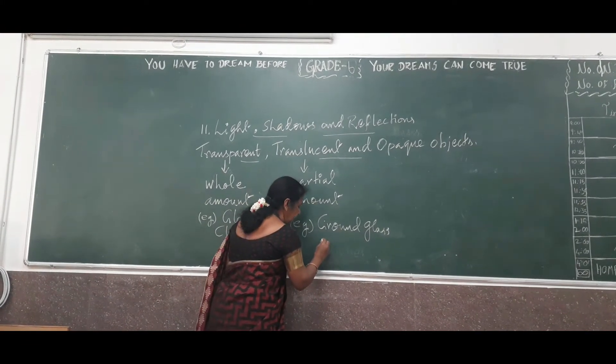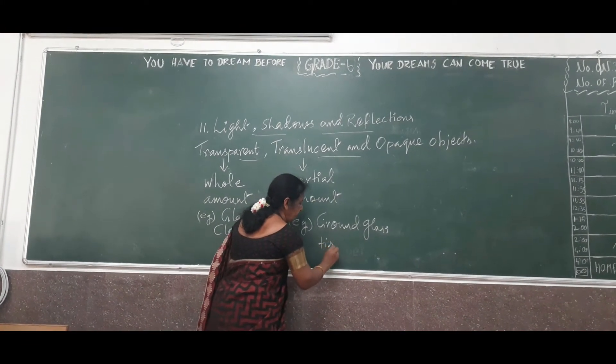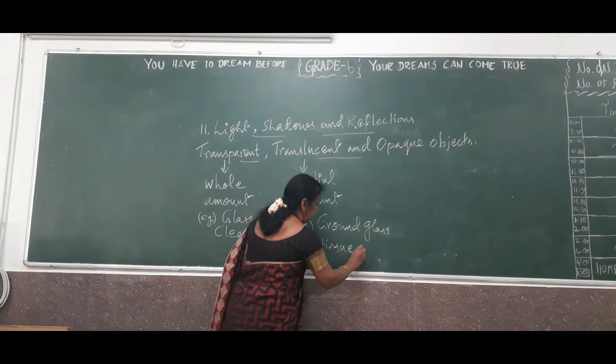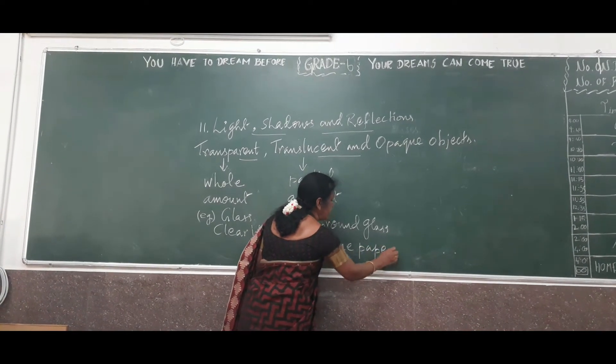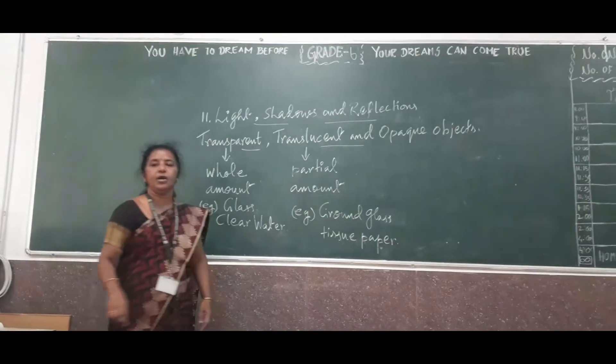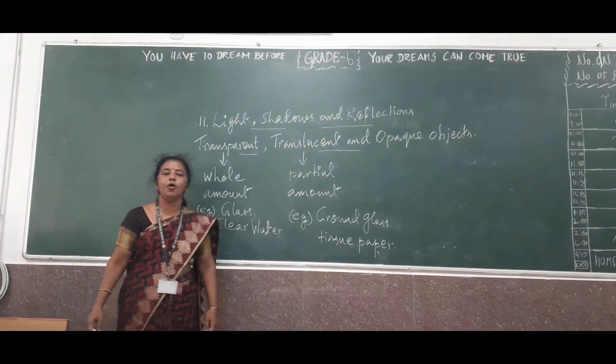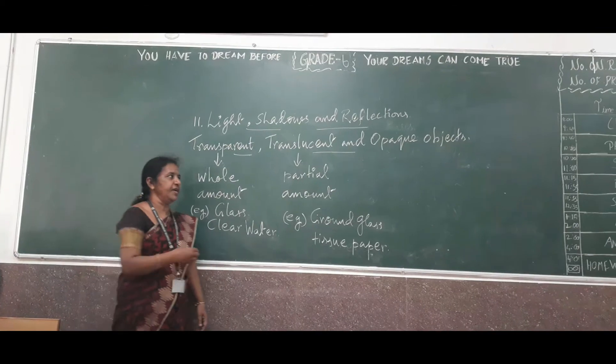that is the tissue paper, or you can see the ordinary paper. All that will not allow the whole amount of light. Even oil paper, etc., you can see.